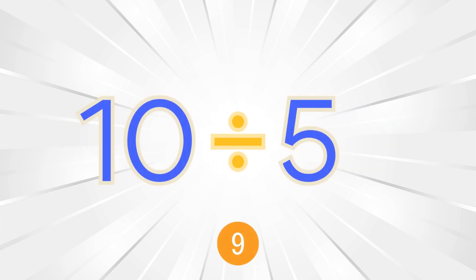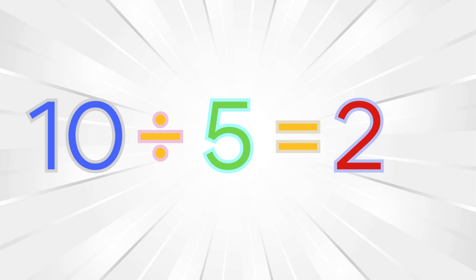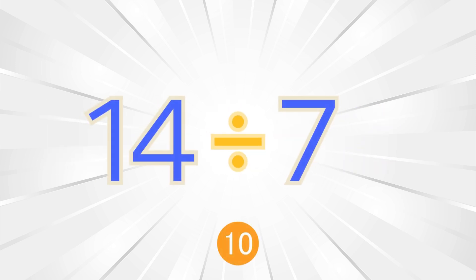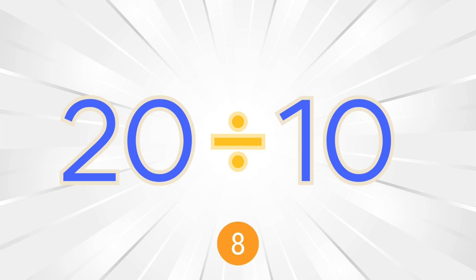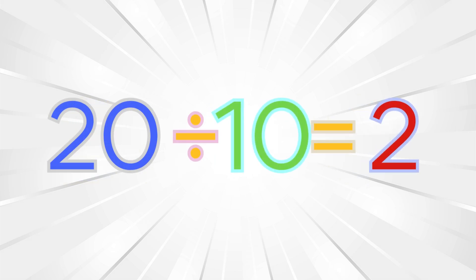Ten divided by five equals two. Fourteen divided by seven equals two. Twenty divided by ten equals two.